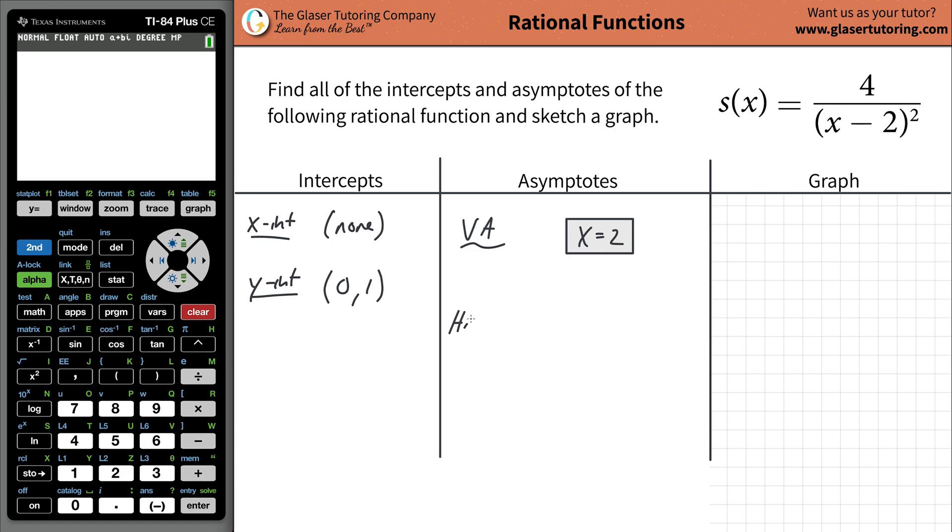Now the next part is to deal with the horizontal asymptote or your slant asymptote. What you have to do is determine whether it's something known as top heavy, equally heavy, or bottom heavy. If it's top heavy, you're going to have a slant asymptote. If it's equally heavy or bottom heavy, you're going to have a horizontal asymptote. Basically when we look at the function, whichever side has the highest power of x determines this.